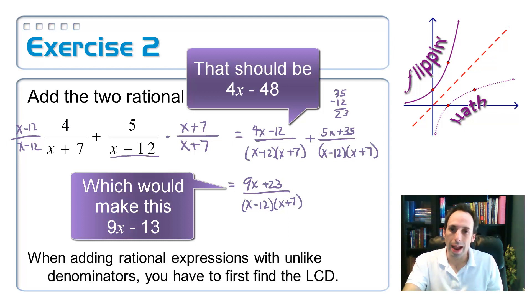So whenever you add two rational expressions that don't have like denominators, you've got to get an LCD. You've got to get a least common denominator. One of the ways to get it is just to multiply the two denominators that you already have together.